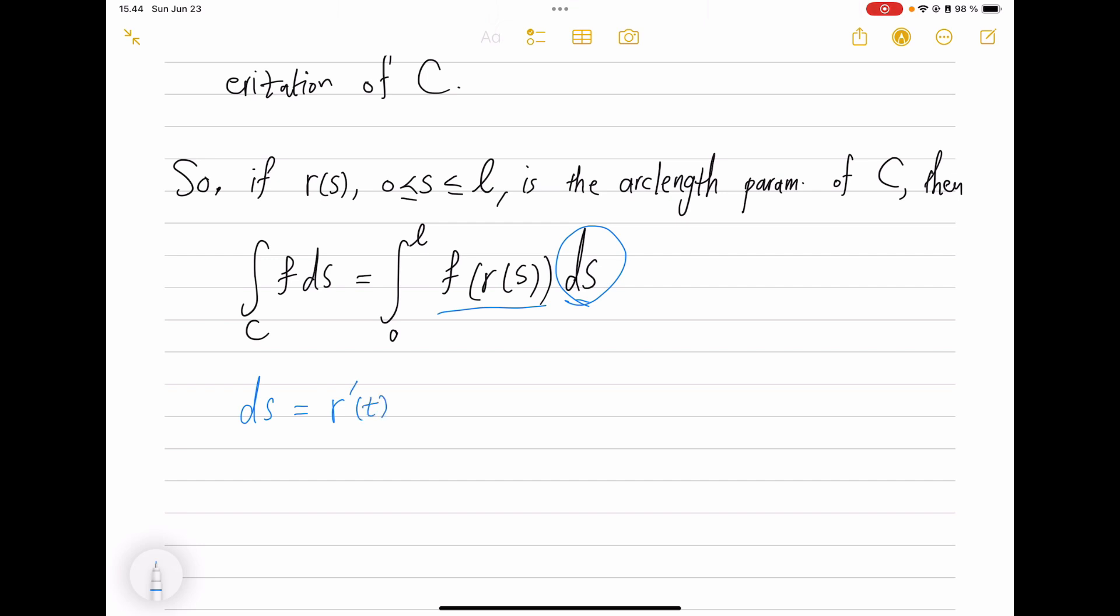This part is very analogous, so we get this and this. Therefore it has been useful to write ds, although this is really just formalism. It's not a mathematical equality—so |r'(t)|dt—but it ends up being useful in formal calculations. That's why we introduced ds.